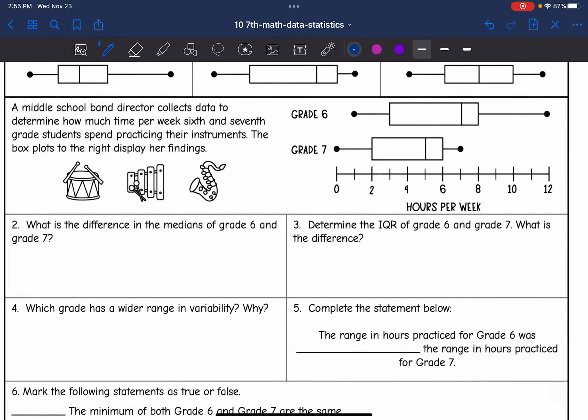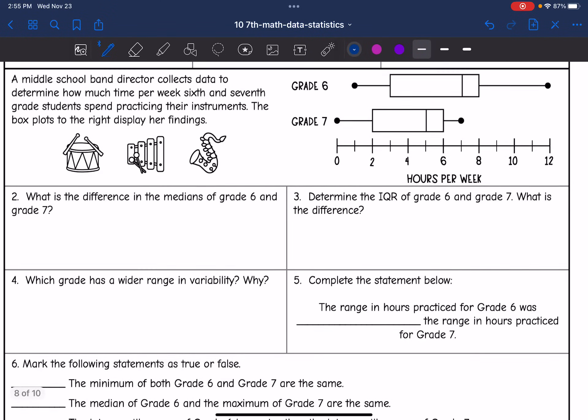Let's look at this next scenario. It says a middle school band director collects data to determine how much time per week sixth and seventh grade students spend practicing their instruments. The box plots to the right display her findings. So here is grade six. It has more of a spread between the minimum and the maximum.